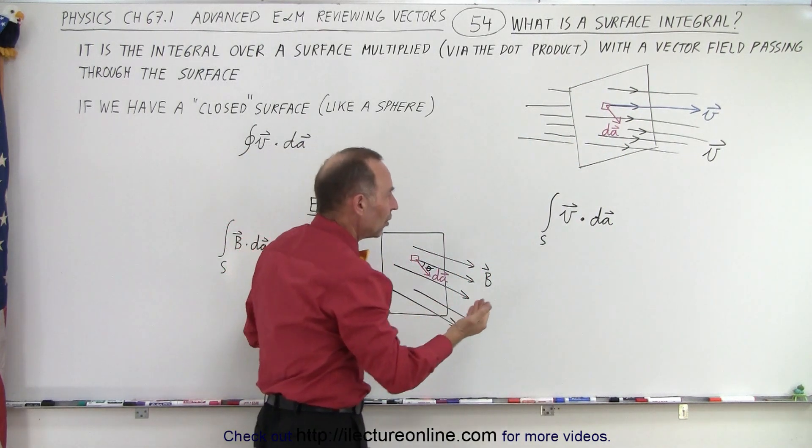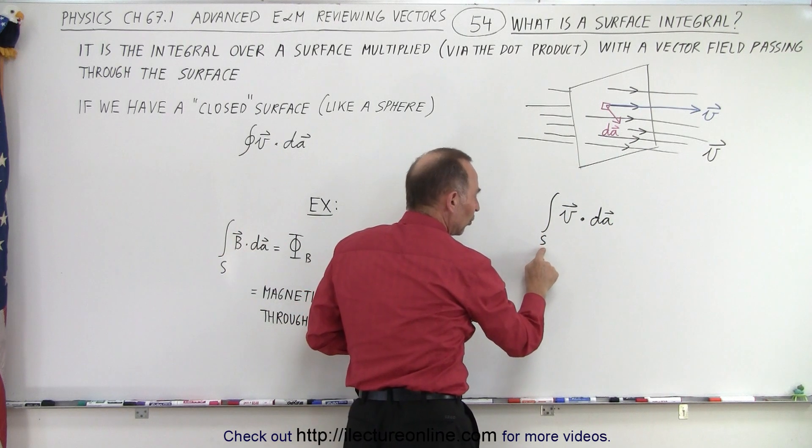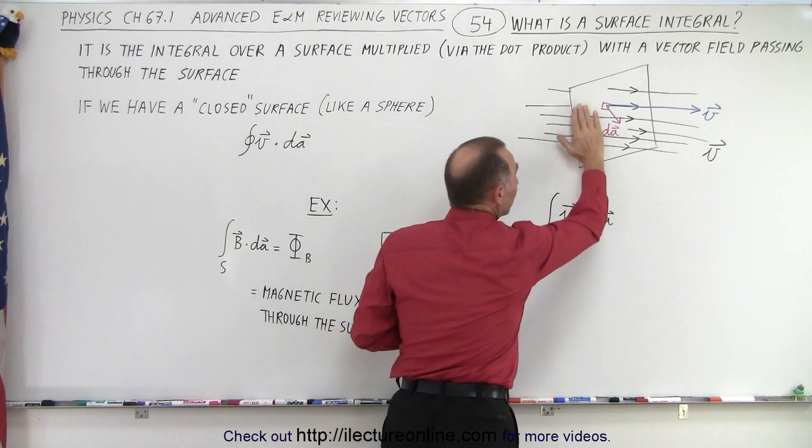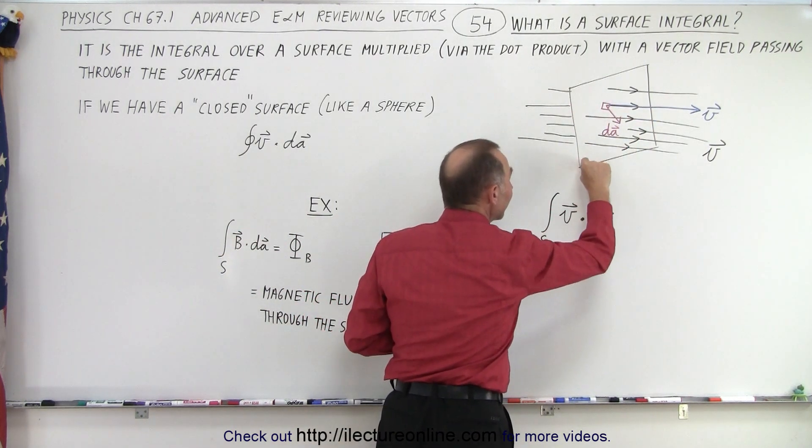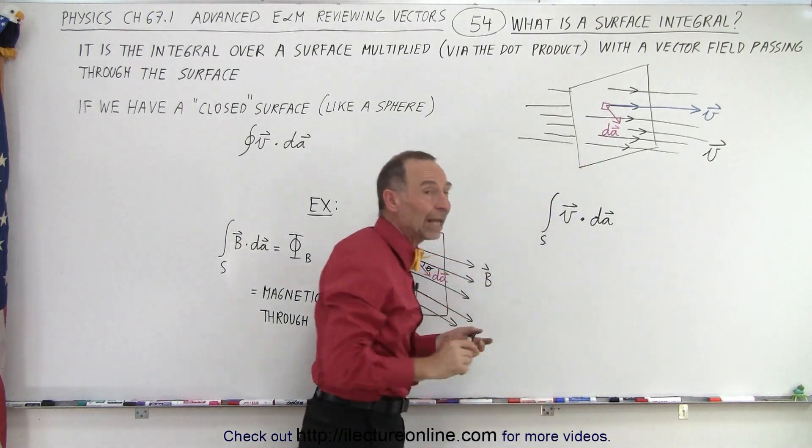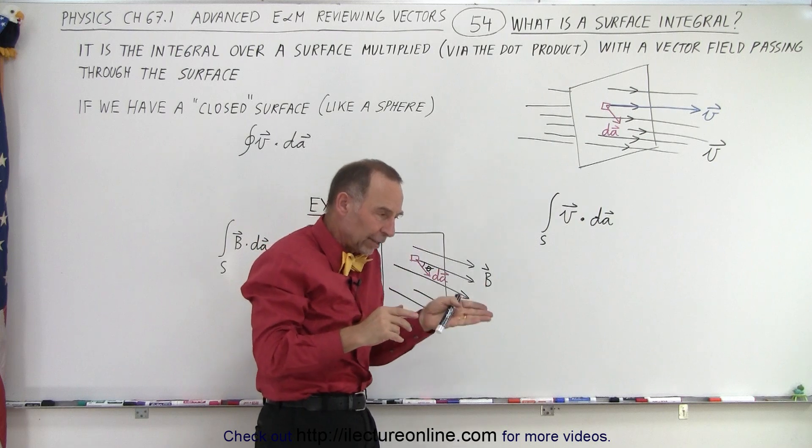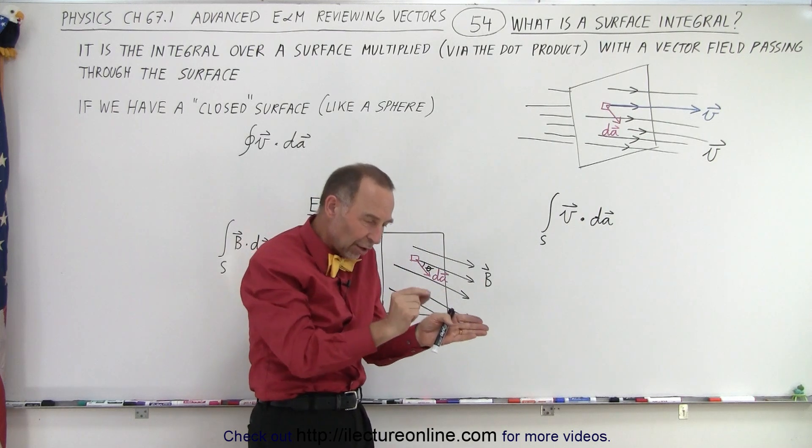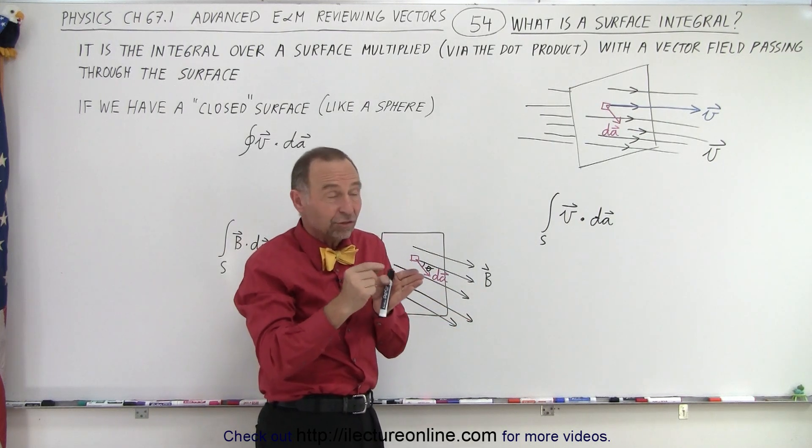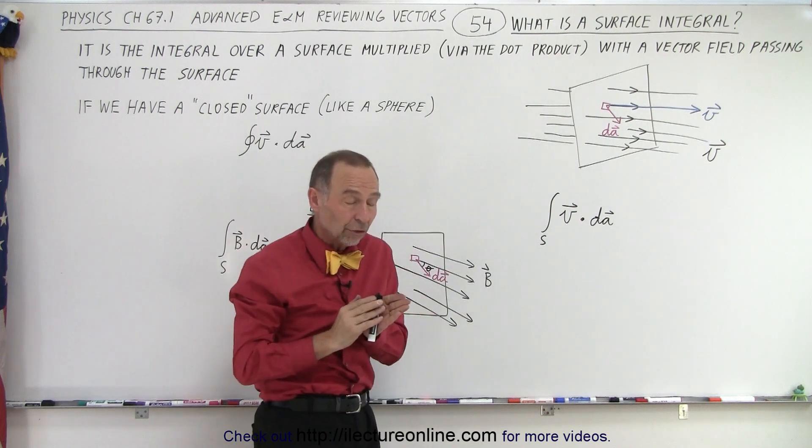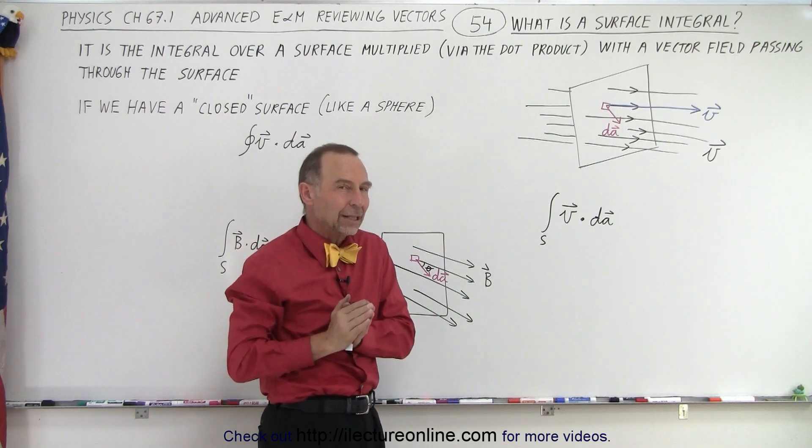So we write it as follows. It's an integral across the surface of the vector field anywhere along the surface, multiplied times a small area element. So each time you take a dot product, you multiply the magnitude of the vector field at that point, the magnitude of the area, which is going to be constant typically across the surface, times the cosine of the angle between them.